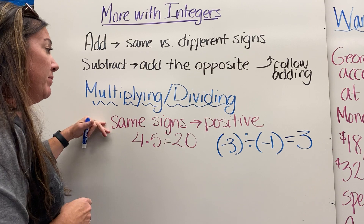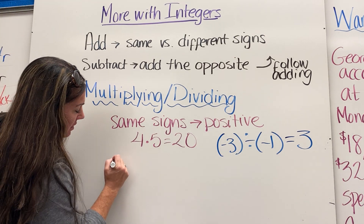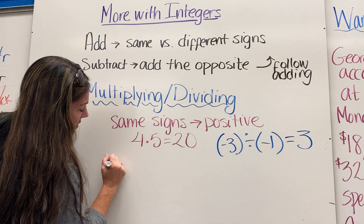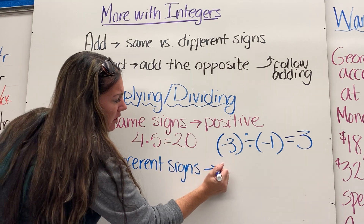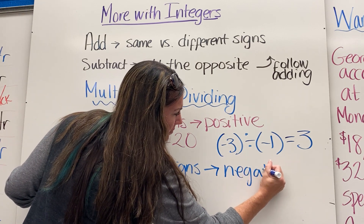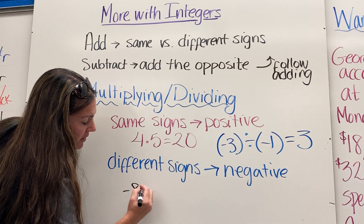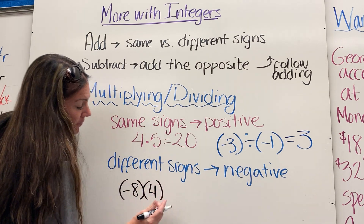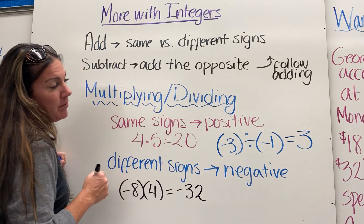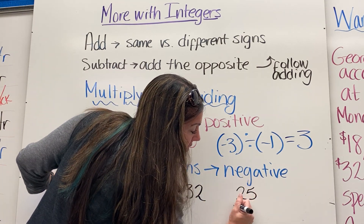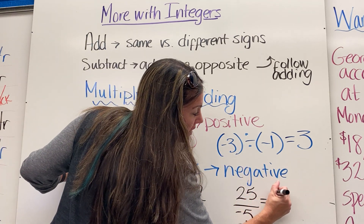If the numbers have different signs, our answer is always negative. So for negative 8 times 4, it's like 8 times 4 which is 32, but they have different signs, so it becomes negative 32. Similarly, 25 divided by negative 5 — positive divided by negative, different signs — so the answer is negative 5.